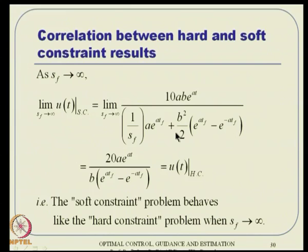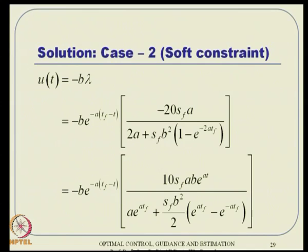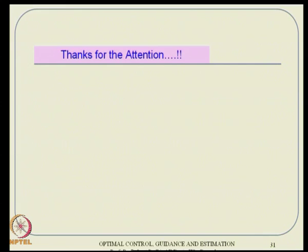These two examples — the inverted pendulum and the temperature control problem — give us a good understanding of how to handle LQR problems both via the Riccati equation and through hard and soft constraint formulations. Much more on LQR control, extensions, and proofs will follow in subsequent lectures.